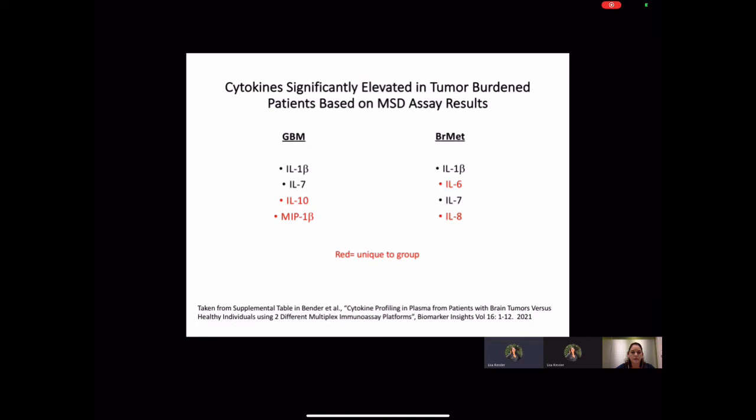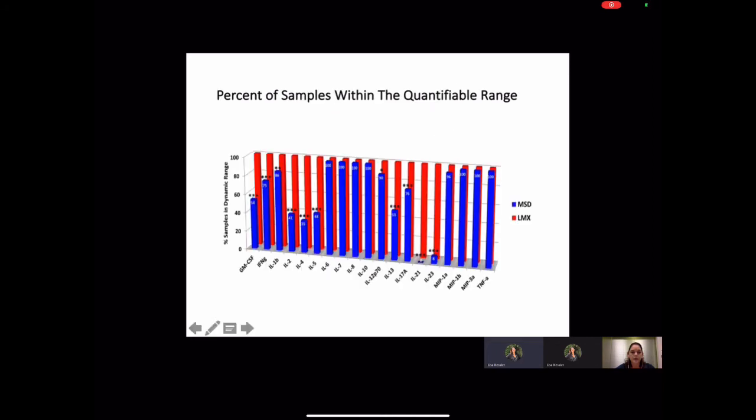When we evaluated the percent of samples that were within the limits of quantitation, we found that a majority of the MSD analytes were actually not quantifiable. In particular, IL-2, IL-4, IL-5, IL-21, and IL-23 had less than 50 percent of the samples with measurable values.